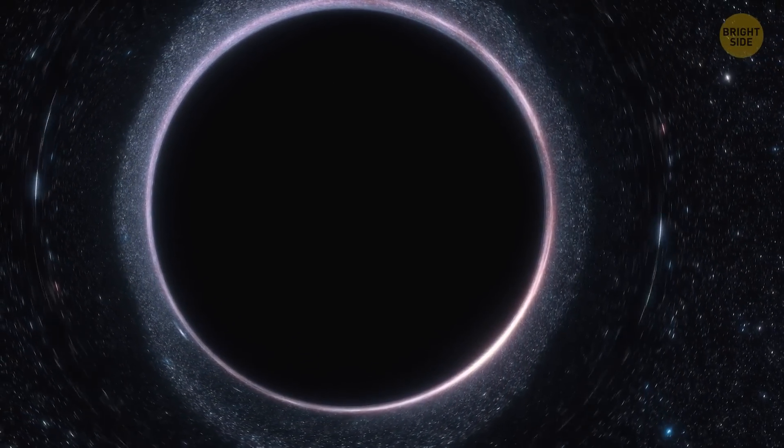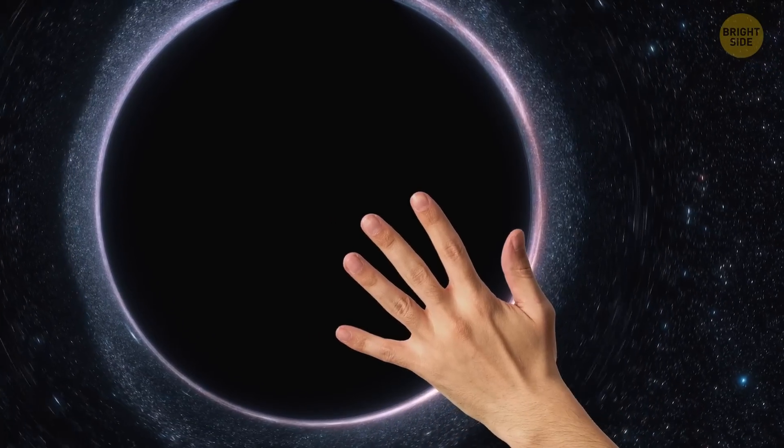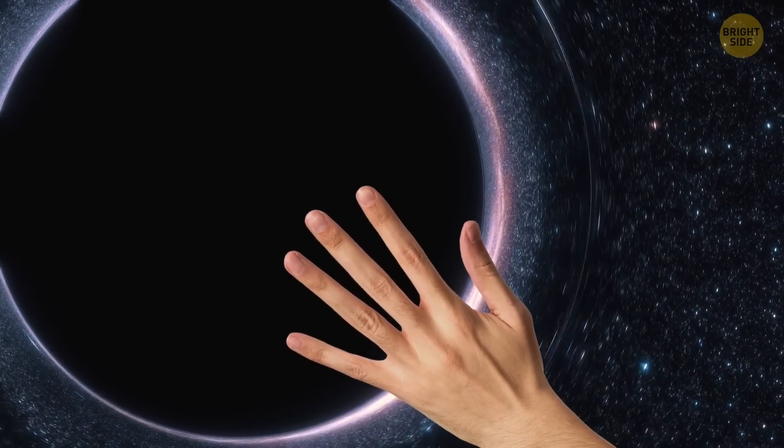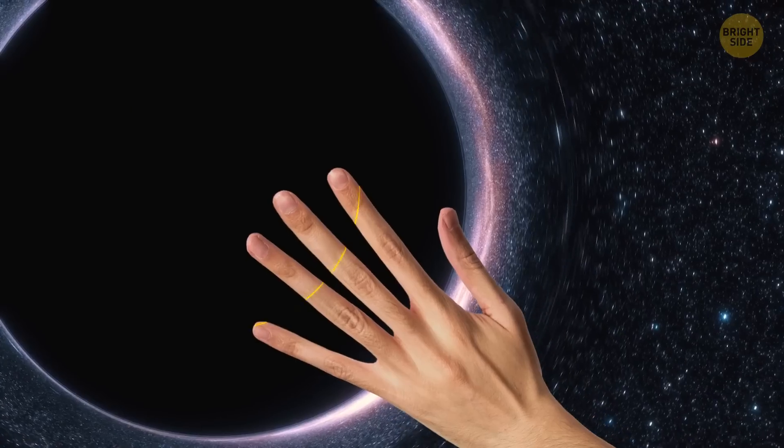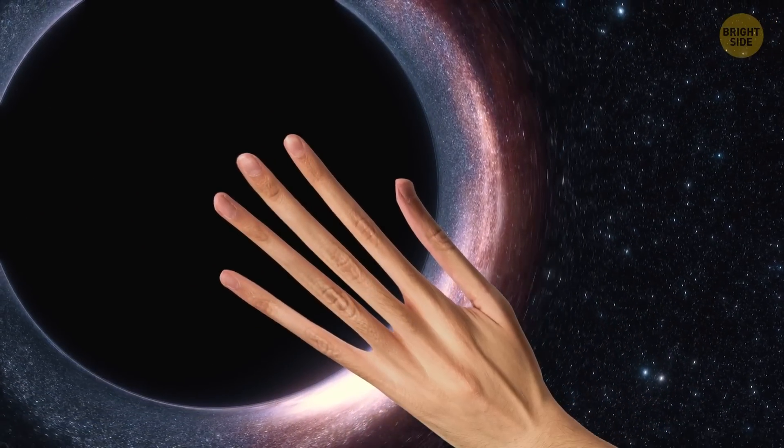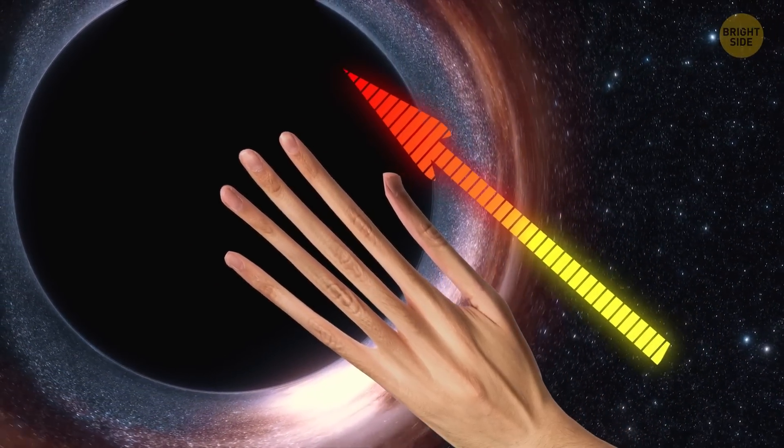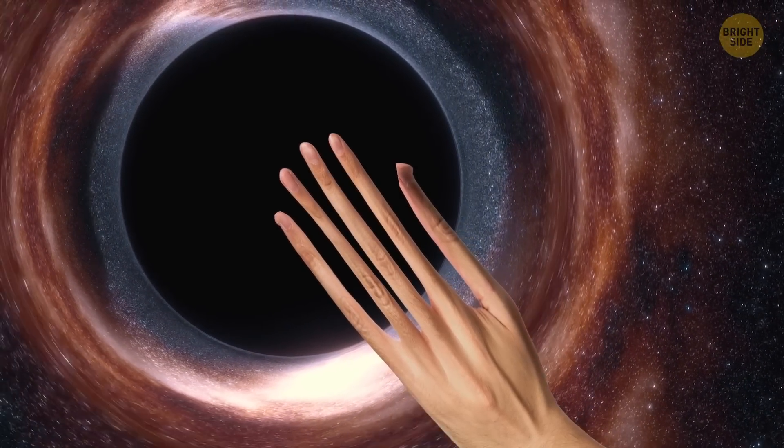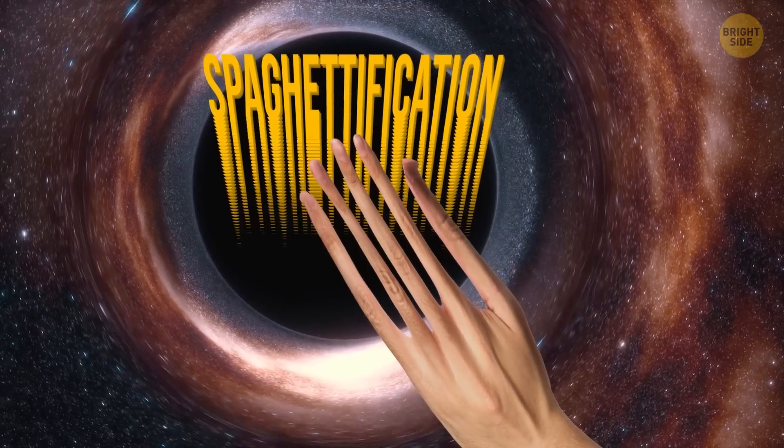If you had the opportunity to extend your hand toward the black hole, you would see your fingers begin to stretch and elongate. This is because the force of attraction increases with every inch. Therefore, it acts stronger on your fingers than on your arm. That's why this process of pulling objects into a black hole is called spaghettification.